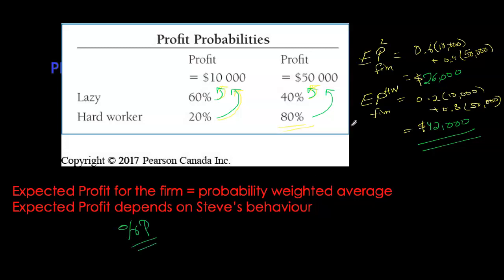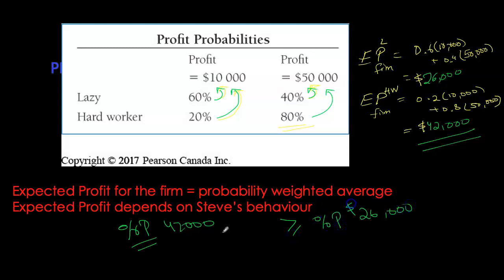If this fixed percentage is 10%, Steve would rather be working hard because 10% of $42,000 is obviously higher than 10% of $26,000. But what is the minimum amount we need to offer him? We can calculate that minimum by ensuring his payoff will always be higher under the hard-working outcome. His fixed percentage share of profits from $42,000 should be higher than his percentage share when the firm is making $26,000. We must also account for Steve's personal cost when working hard, which could be $2,000 or $10,000.